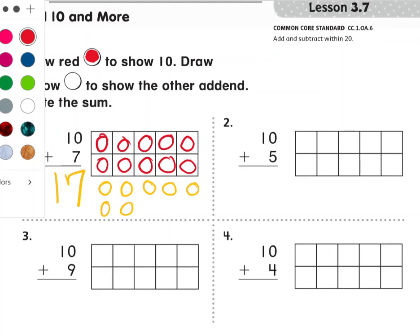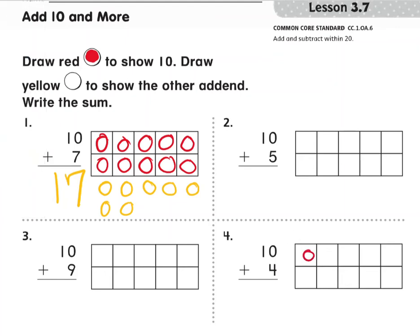So I have 10 up here. Let's do 10 red: 1, 2, 3, 4, 5, 6, 7, 8, 9, 10.